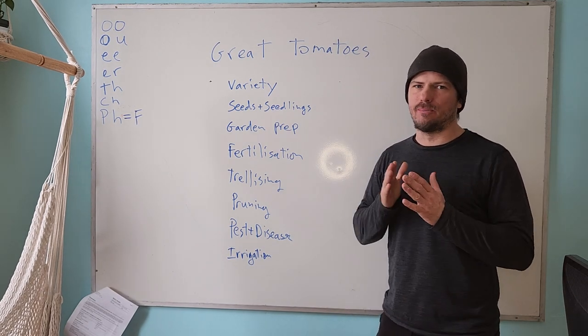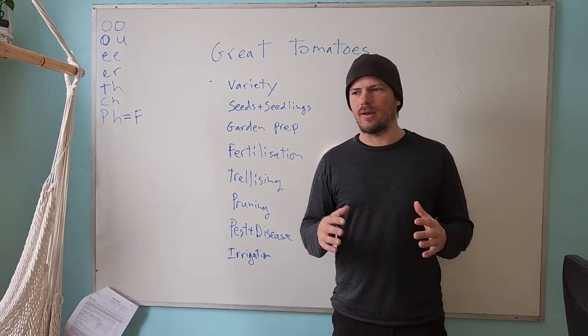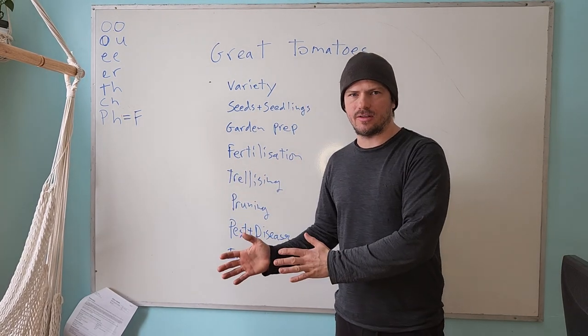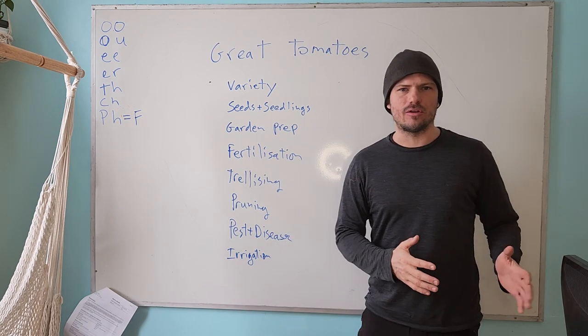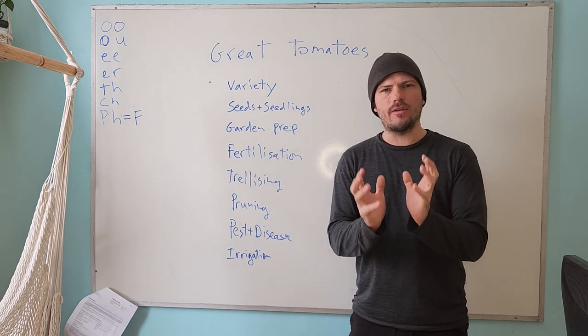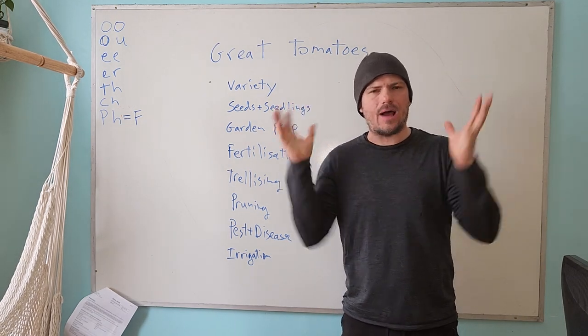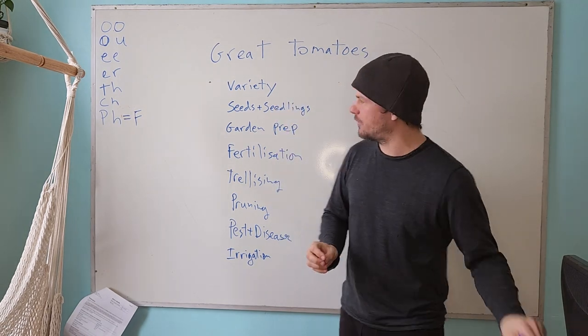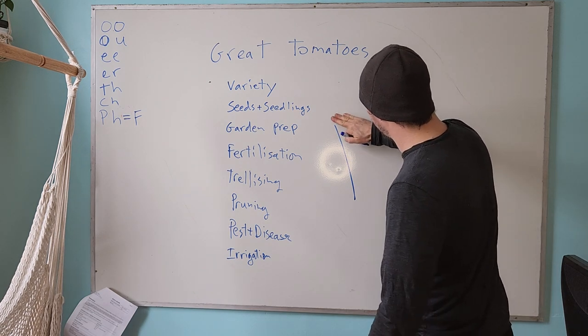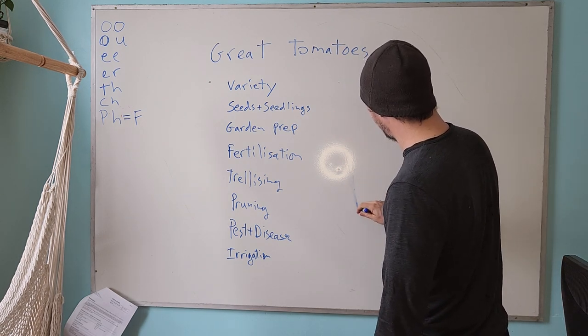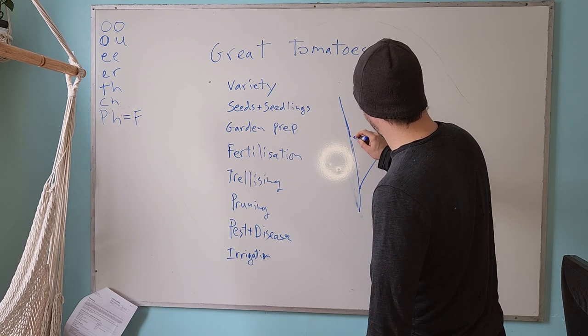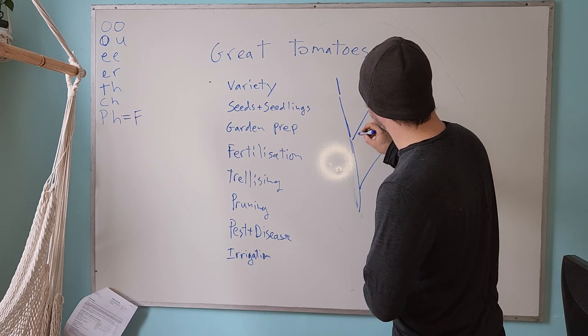Variety selection. So the basic breakdown of tomatoes is that there's a spectrum from what we call determinate tomatoes to indeterminate tomatoes. So determinate tomatoes, which are also called bush tomatoes, are plants that will grow and all their fruit will flower all at the same time and set their fruit at the same time. So for instance, if you've got a plant growing, let's say, how do we draw a realistic tomato plant?